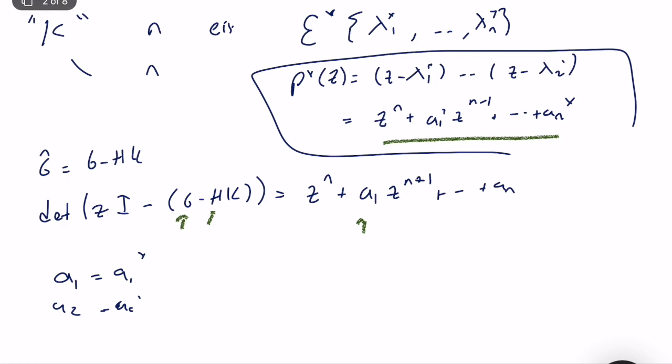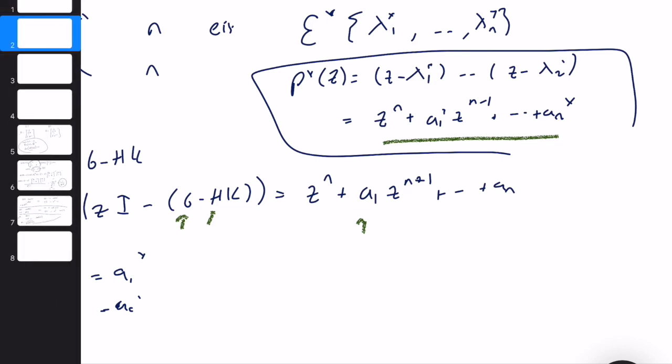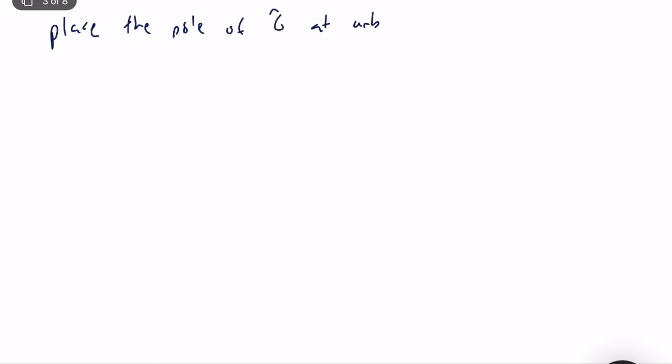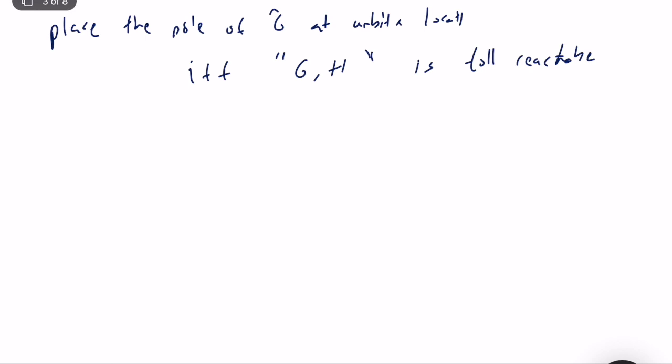So the question is: can we do that, and how? We can place the poles of G-hat at arbitrary locations if and only if the original system (G, H) is fully reachable. This is very important: if your system is fully reachable, you can place any eigenvalue at any location. Being fully reachable is one of the most important properties we want from a state space representation. If not fully reachable, the unreachable modes need to be stable, and you should redesign to find a minimal representation.